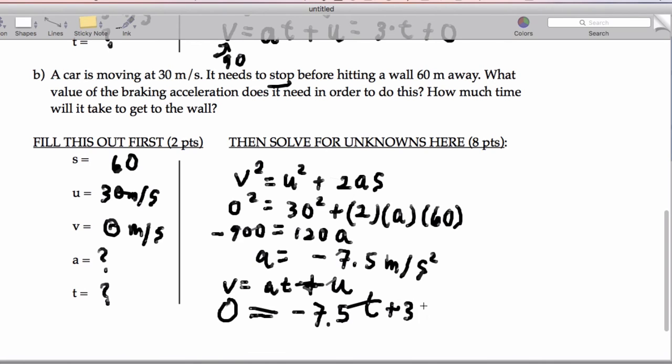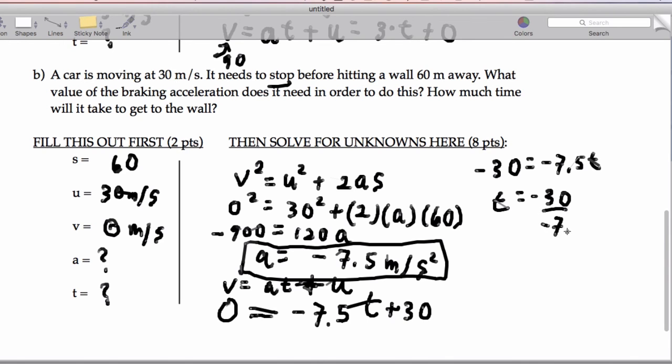That's going to give us negative 30 equals negative 7.5t. While I'm at it, I'm just going to put a box around our acceleration answer so we have that. So I'm going to end up getting t is negative 30 over negative 7.5, and that's going to give us 4 seconds worth of time.